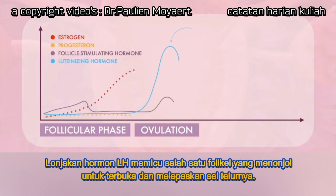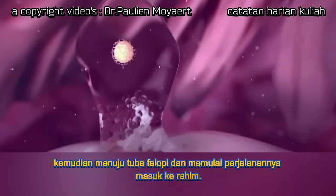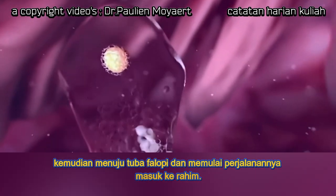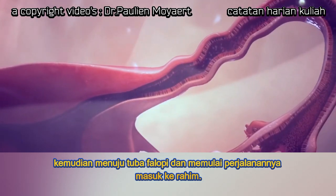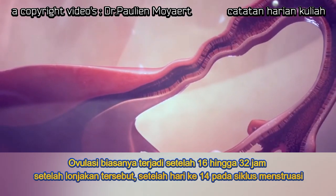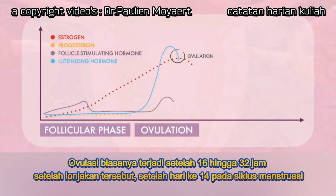The surge of luteinizing hormone triggers one of the most prominent follicles to pop open and release its egg, which heads into the fallopian tube and starts its journey towards the uterus. Ovulation usually occurs 16 to 32 hours after the beginning of the surge, around day 14 of the menstrual cycle.